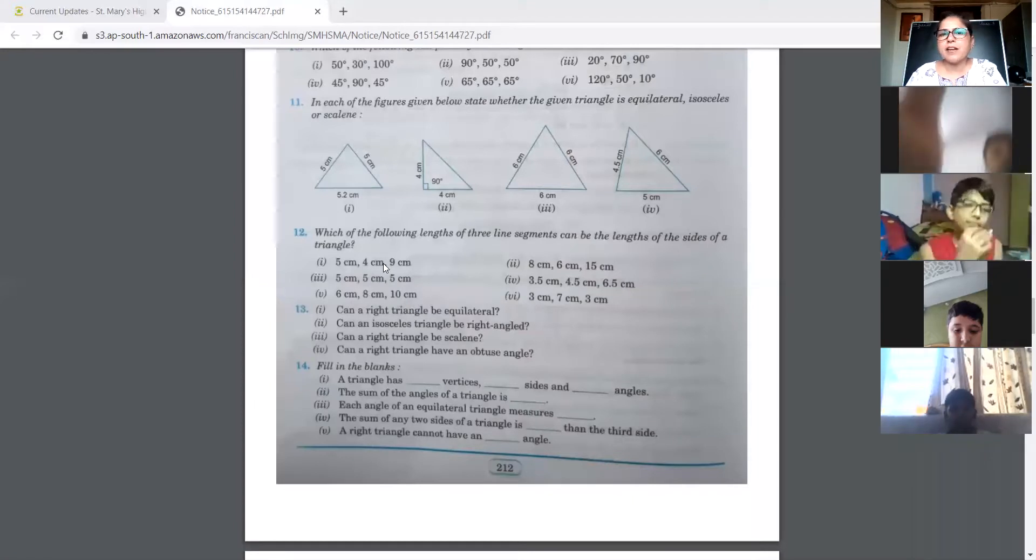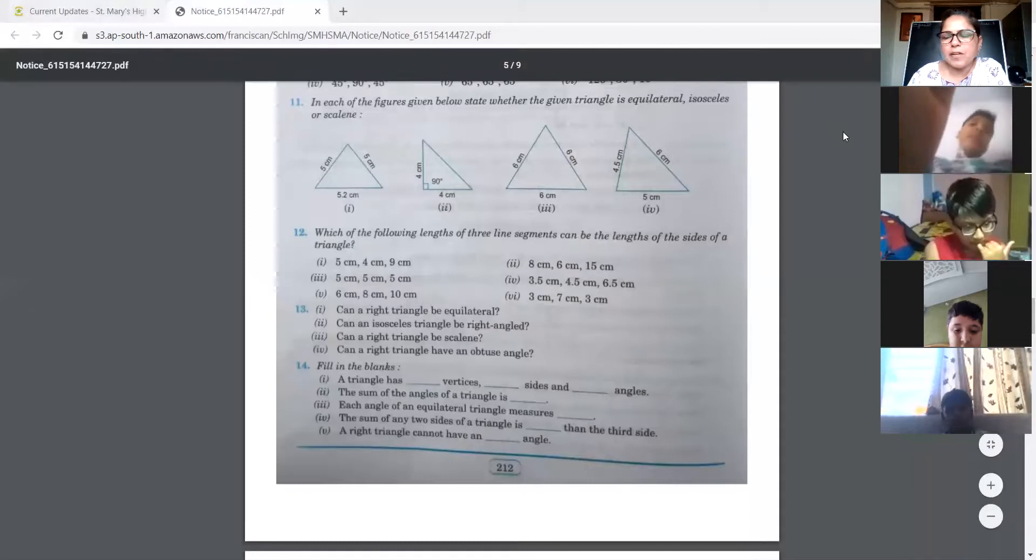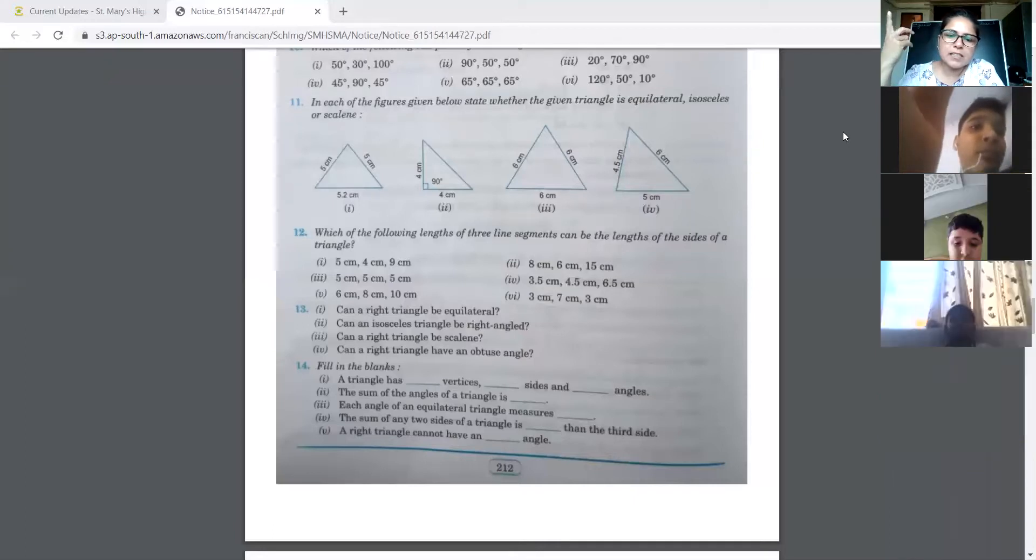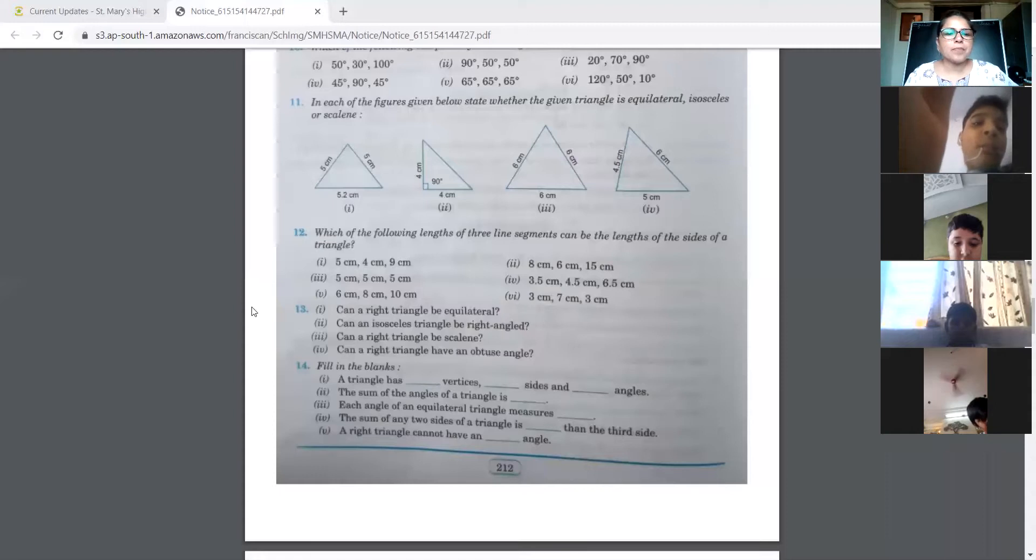In this we have to take into consideration the property which says the sum of any two sides of a triangle is always greater than the third side. So you add up any two sides and it should always be greater than the third side.